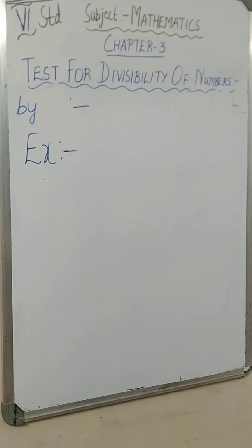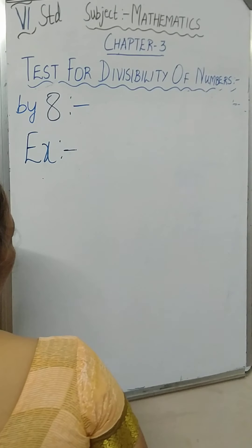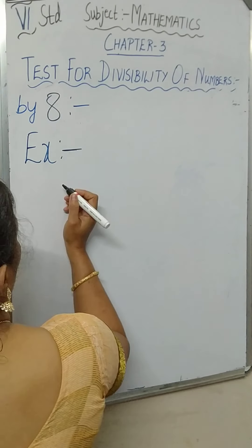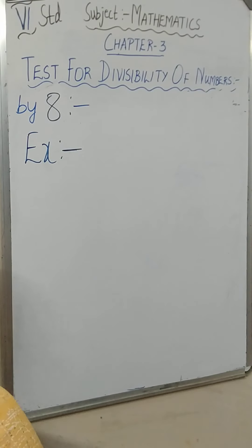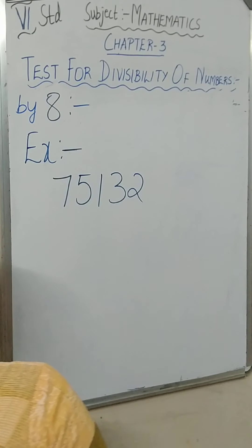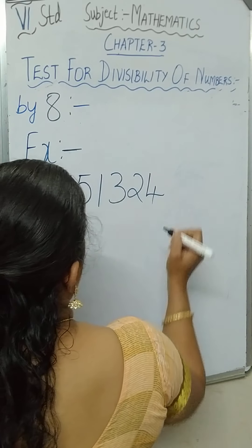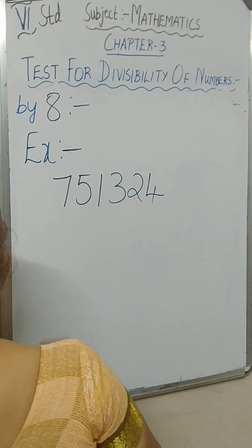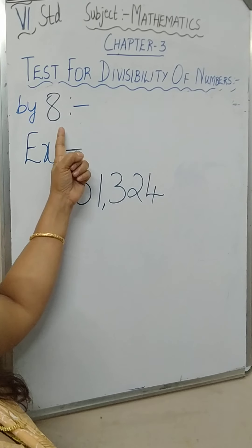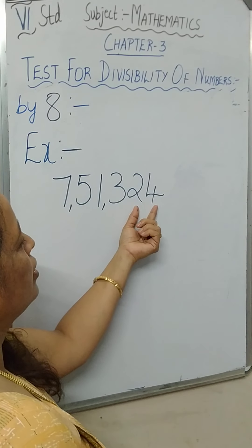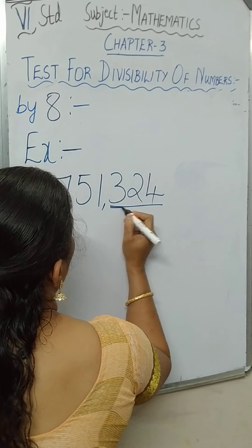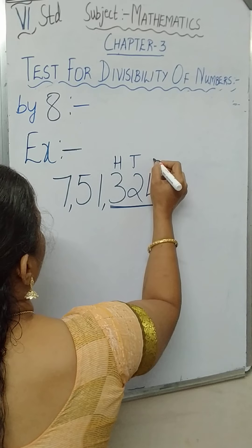Let us go for the number 8. What was the rule for 4? For 4, we saw the number in the tens place and ones place. Now for 8, we see the last 3 numbers — that is the number in the hundreds place, tens place and ones place — and check whether it is divisible by 8. For example, look at the number 7,751,324. The last three digits are 324.